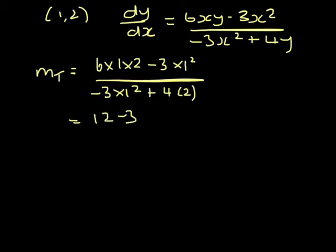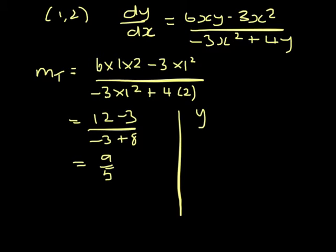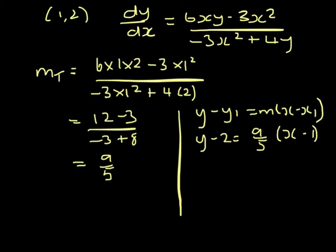12 minus 3 over minus 3 plus 8. So that's 9 over 5. Substituting into my equation of a straight line, y minus y1 equals m upon x minus x1. So y minus 2 equals 9 over 5 upon x minus 1.